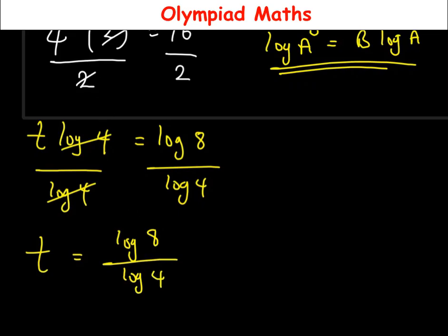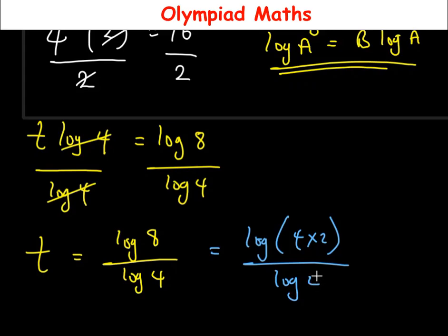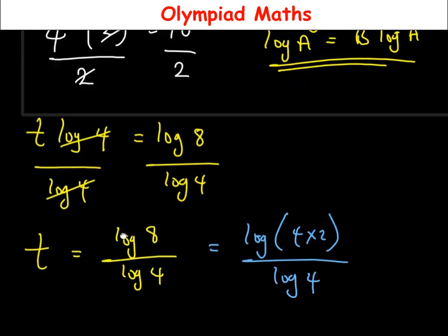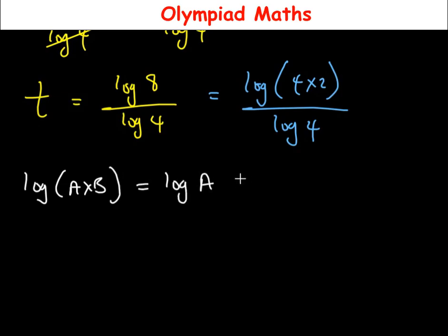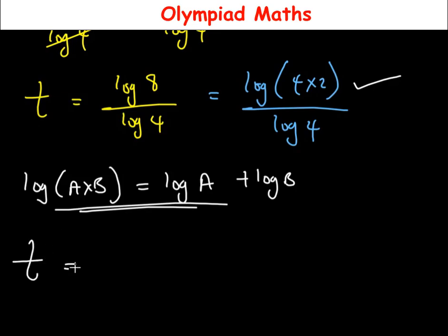We simplify by expressing 8 as 4 times 2, so we have log(4 times 2) all over log(4). There is a rule of logarithm that log(a times b) equals log(a) plus log(b). Applying this rule, t equals log(4) plus log(2), all over log(4).